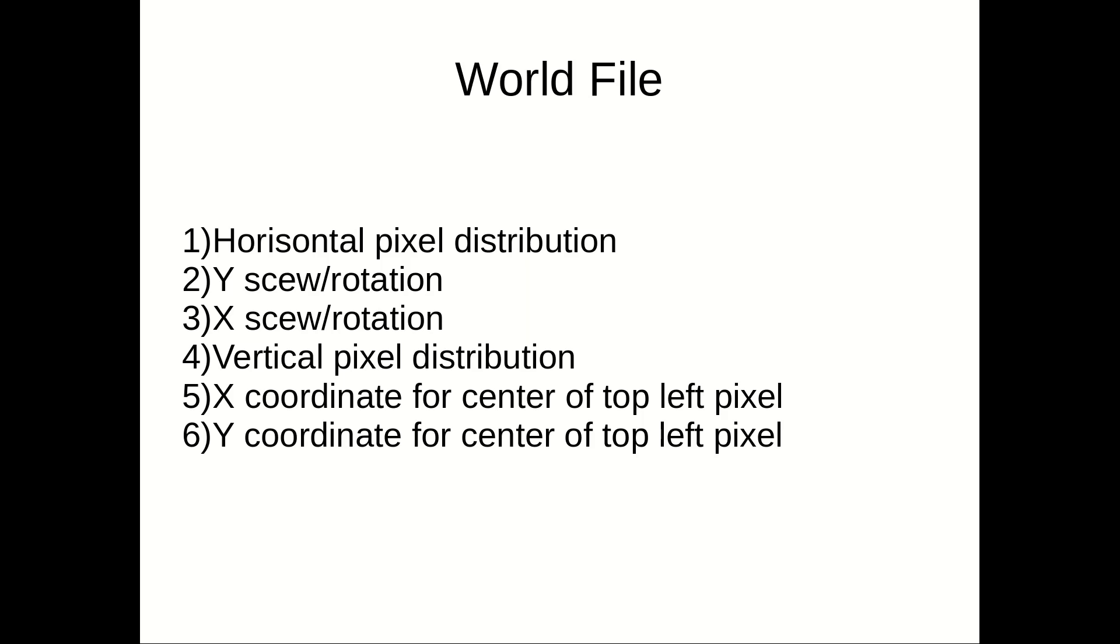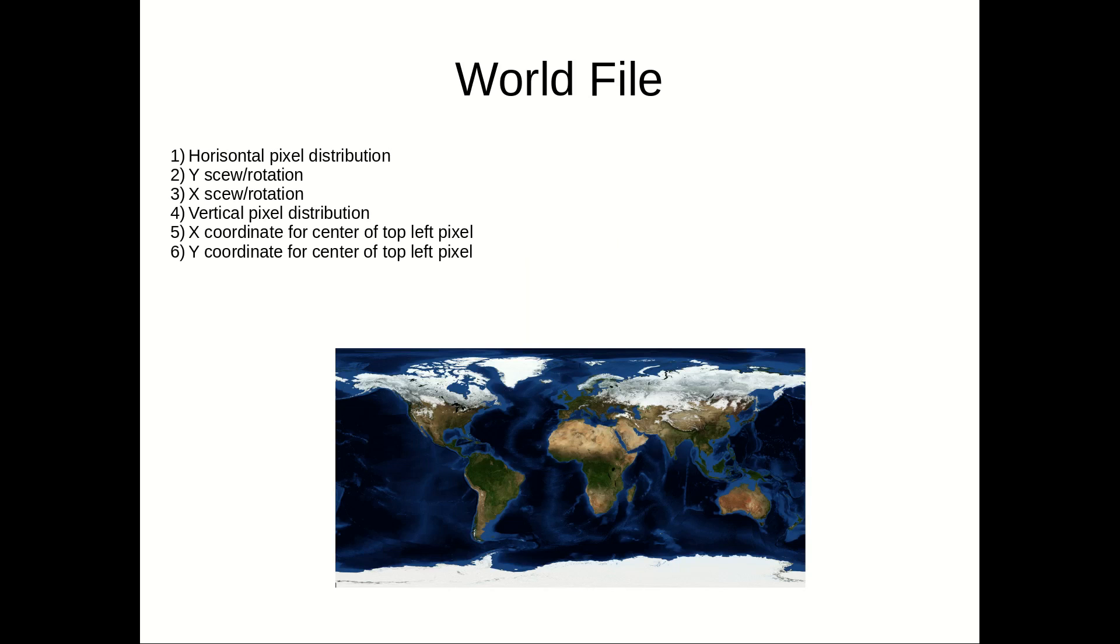The second and third rows can simply be described as skew or rotation horizontally and vertically. As long as the raster is oriented in the coordinate system, these rows are zero.